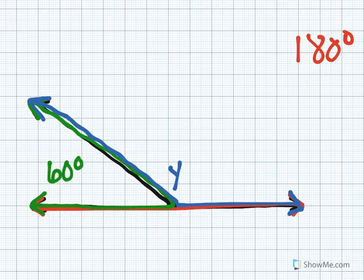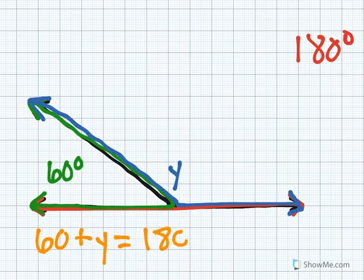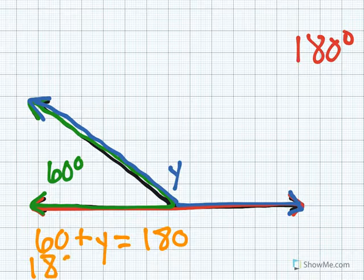So if I was going to write an equation with an unknown I can write 60 plus Y equals 180 or I could write 180 minus 60 equals Y.